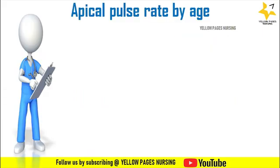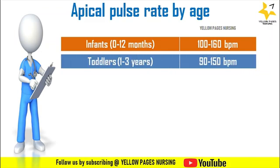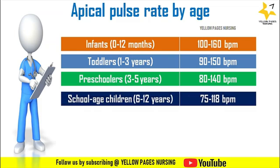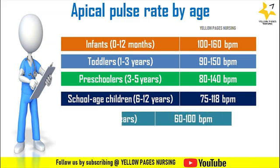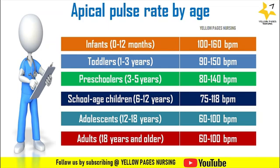Now let's look at apical pulse rates by age. In infants 0 to 12 months, the apical pulse ranges from 100 to 160 beats per minute. In toddlers 1 to 3 years, 90 to 150 beats per minute. In preschoolers 3 to 5 years, 80 to 140 beats per minute. In school-age children 6 to 12 years, 75 to 118 beats per minute. In adolescents 12 to 18 years and in adults 18 years or older, 60 to 100 beats per minute.